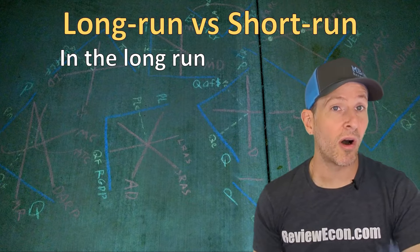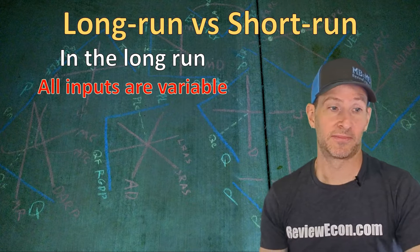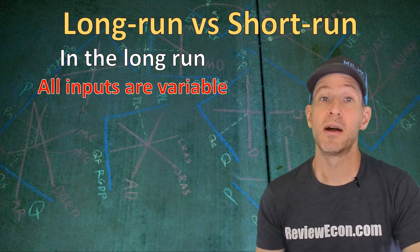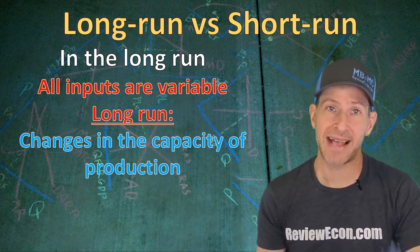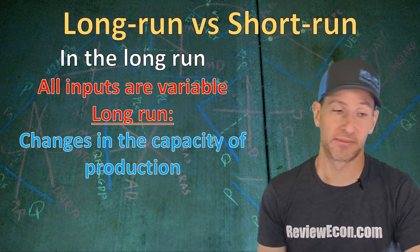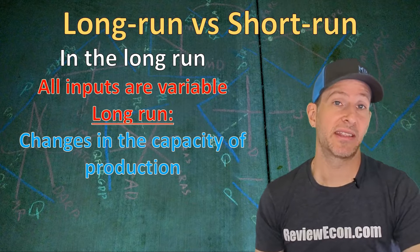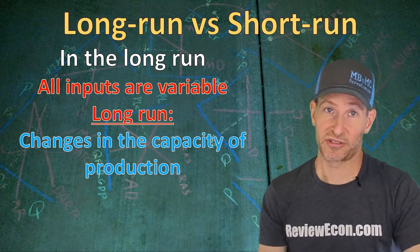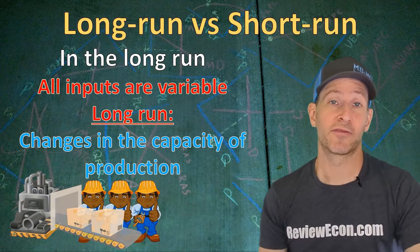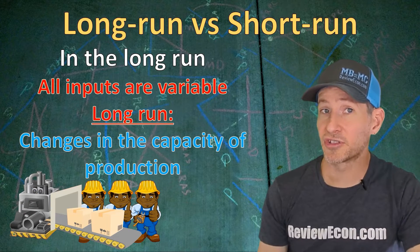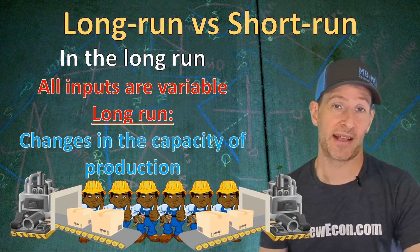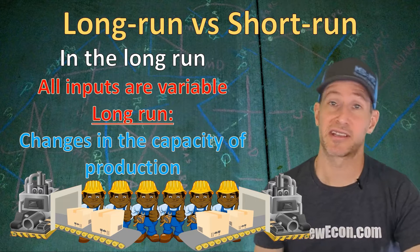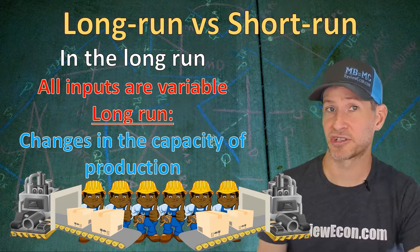But the capacity of production will remain fixed in the short run. On the other hand, in the long run, all inputs are going to be variable. Not only can we change the rate of production in the long run, but we can also change the capacity of production — we're talking about increasing or decreasing the maximum amount of production a firm can produce. So not only can we change the number of workers, but we can also change the amount of physical capital a firm has, and increasing physical capital increases the capacity of production.